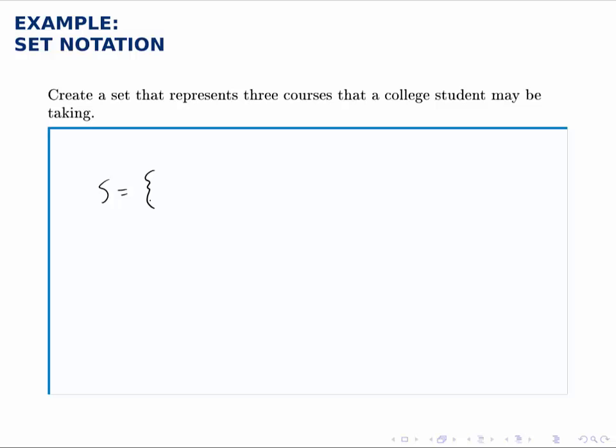So we can come up with any classes we want. For instance, we could say the student is taking Statistics and perhaps Psychology and maybe Western Civ.